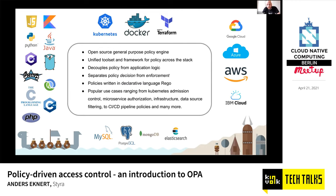OPA is a policy decision engine, though. It doesn't do actual enforcement — that's still up to your applications, how they choose to act on these decisions. Normally that could be responding with a status code of 401 or 403, or maybe sending a message to some Slack channel, but that's still up to your application. OPA is basically just giving you the decision. Policies are written in a language called Rego, which is a declarative language. Since it is a general purpose policy engine, it's found use cases in everything from Kubernetes admission control, microservice authorization, infrastructure policies, data source filtering, and so on — pretty much anywhere you can find policy, you can find OPA.